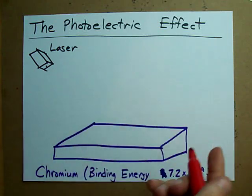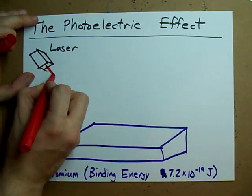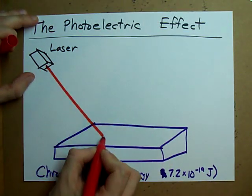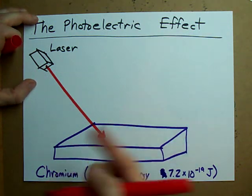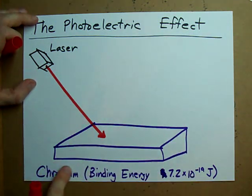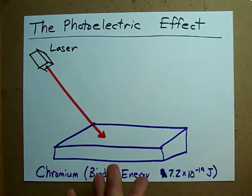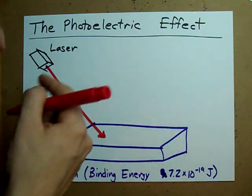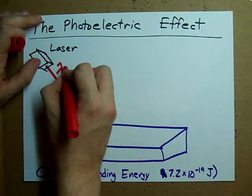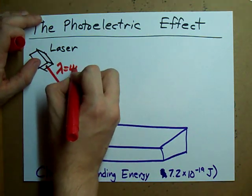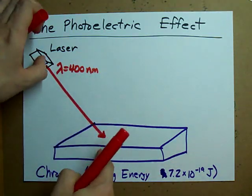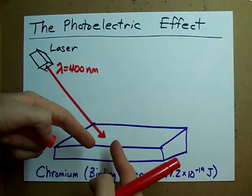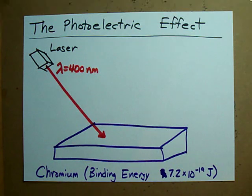now it can be a laser, it can be anything — when you shine light at the surface of a metal, it can be any metal: calcium, gold, zinc. In this example it's chromium. The light, depending on how much energy it has, passes that amount of energy on to the electrons in one of the atoms of the metal.